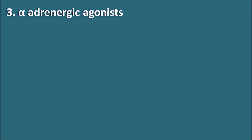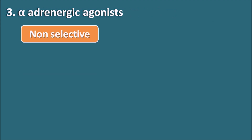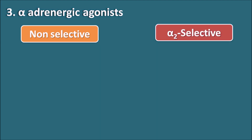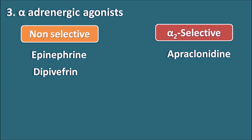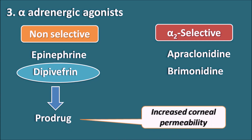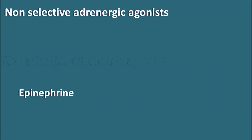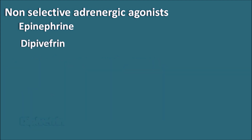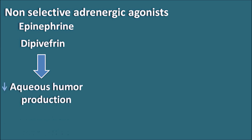The third type of drugs are the alpha-adrenergic agonists. This category includes non-selective alpha-adrenergic agonists — epinephrine and dipivefrine — as well as alpha-2 selective adrenergic agonists — apraclonidine and brimonidine. Dipivefrine is a prodrug of epinephrine with increased corneal permeability and thus enhanced pharmacological action. The non-selective agents act as agonists on both alpha and beta receptors. Their action on beta receptors decreases aqueous humor production, and action on alpha receptors increases outflow.